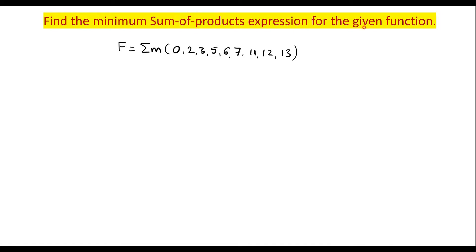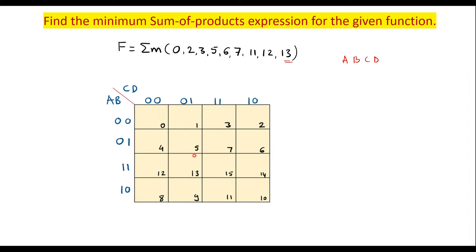Now let's work through a full example: find the minimum sum-of-products expression for f = Σm(0, 2, 3, 5, 6, 7, 11, 12, 13). These are minterm numbers, so this is an SOP form. The maximum decimal number is 13, which requires 4 bits, so we use a 4-variable Kmap with variables A, B, C, D.